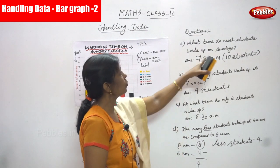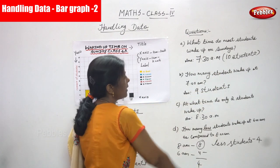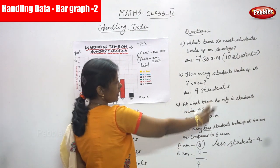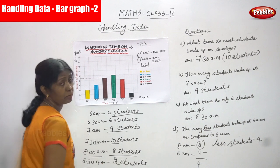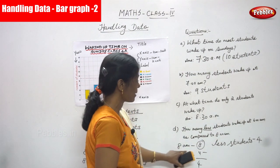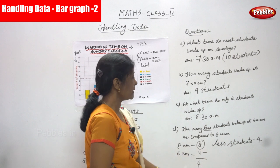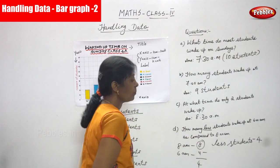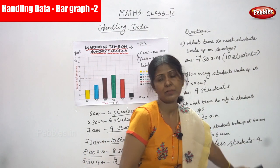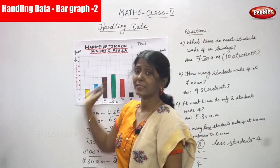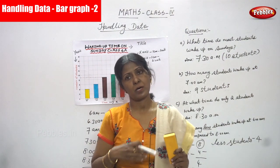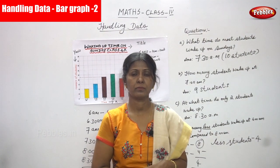So: most students wake up on Sunday at 7:30 a.m. — number of students is 10. How many students wake up at 7 a.m.? That is 9 students, very clearly mentioned. At what time do only 2 students wake up? At 8:30 a.m. — only 2 students wake up on Sunday. And how many less students wake up at 6 a.m. as compared to 8 a.m.? 8 a.m. = 8 students, 6 a.m. = 4 students. So 8 minus 4 gives 4 — the less students is 4. So 4 less students wake up at 6 a.m. as compared to 8 a.m. This is the right answer for the questions. That's all for handling data, class 4. All the chapters are over in class 4. Thank you so much.